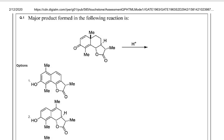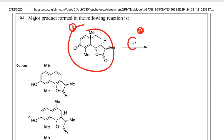Now come to the point: the question asks for the major product formed in the following reaction. In organic problem solving, the first step is to look at the substrate for functional groups and stereochemistry. The second step is to look at the reagents and their combinations. The third step is to look at reaction conditions like thermal or photochemical conditions.